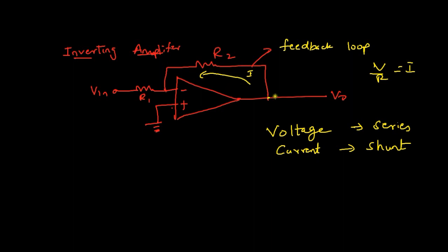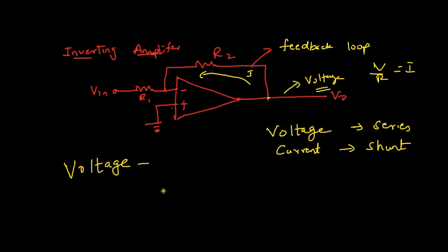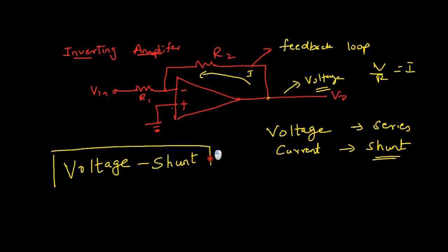The feedback topology: as you can see, the voltage is going to the input terminal. The main feedback we are extracting from is voltage, so first we name it as voltage. Now coming to the second part: either we are applying to the input terminal as a current or as a voltage. Here we are applying it as a current, so hence we use the name shunt. This is the voltage shunt topology. The inverting amplifier uses voltage shunt.